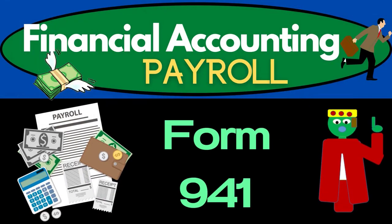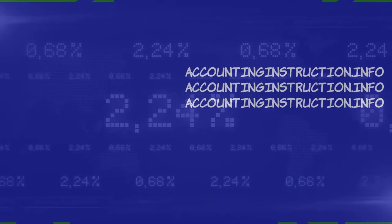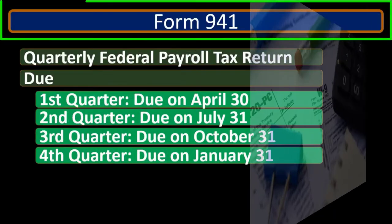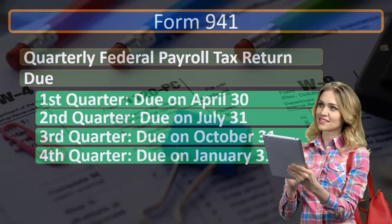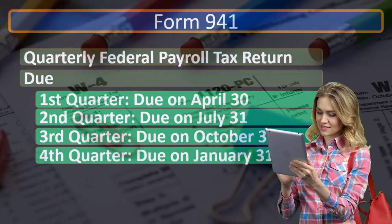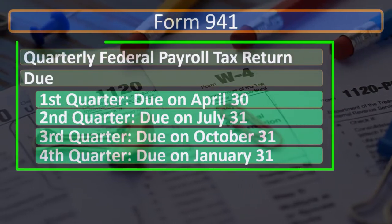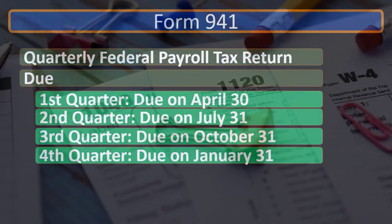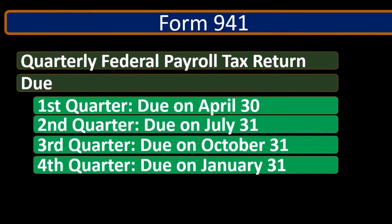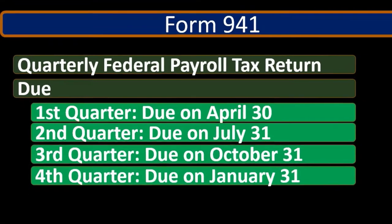In this presentation, we will take a look at Form 941. Form 941 is a quarterly federal payroll tax return. The Form 941 is going to report federal taxes, including the federal income tax, Social Security, and Medicare on a quarterly basis. When we talk about the federal income tax, we're not talking about the taxes for the corporation — it's the income tax for the employees.